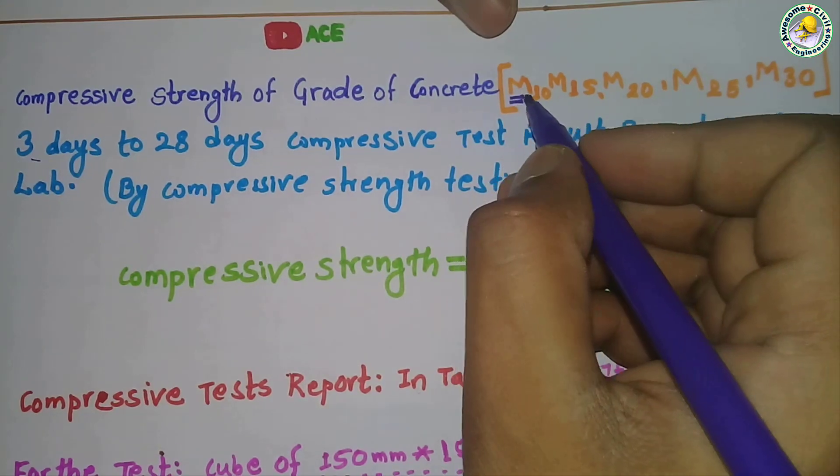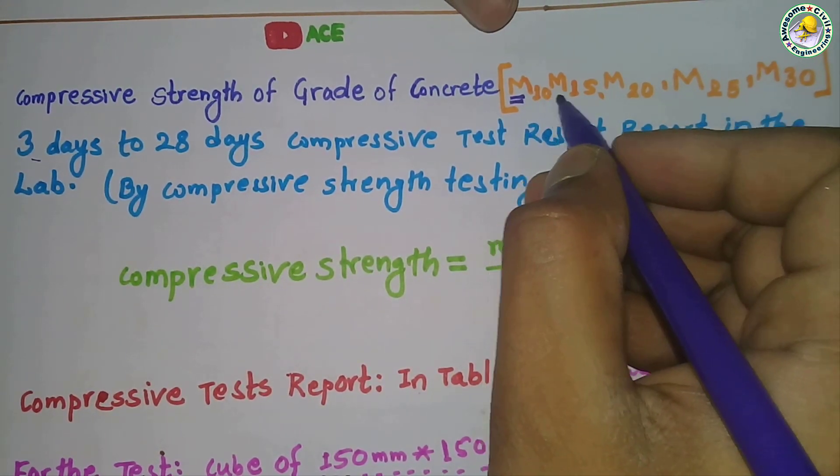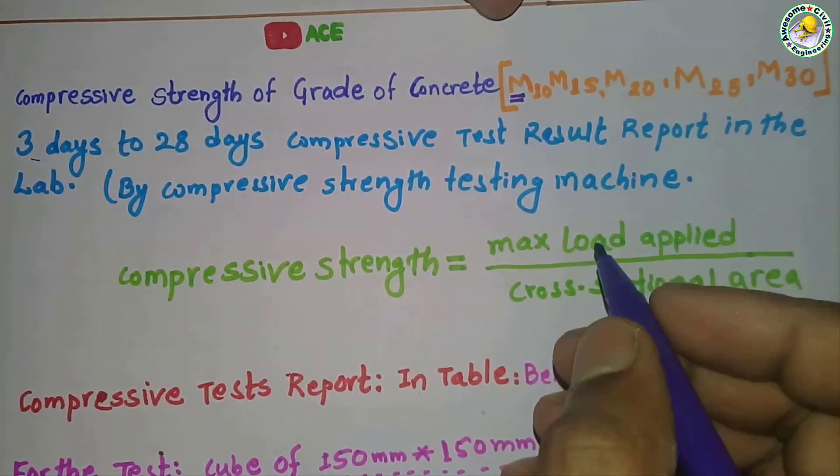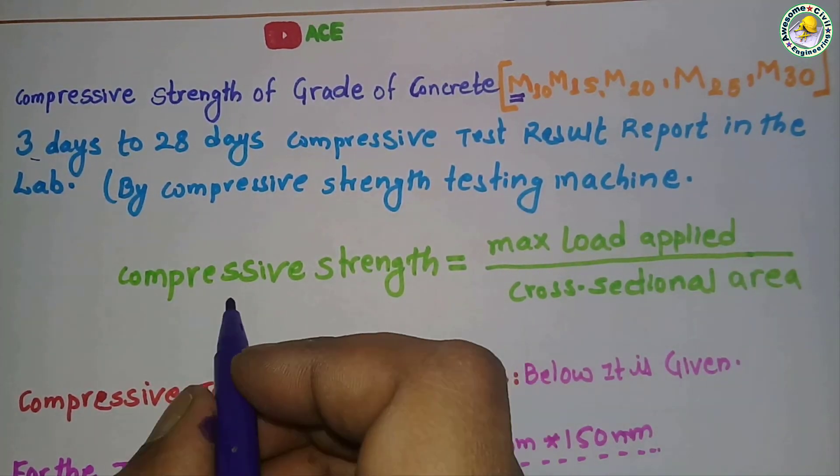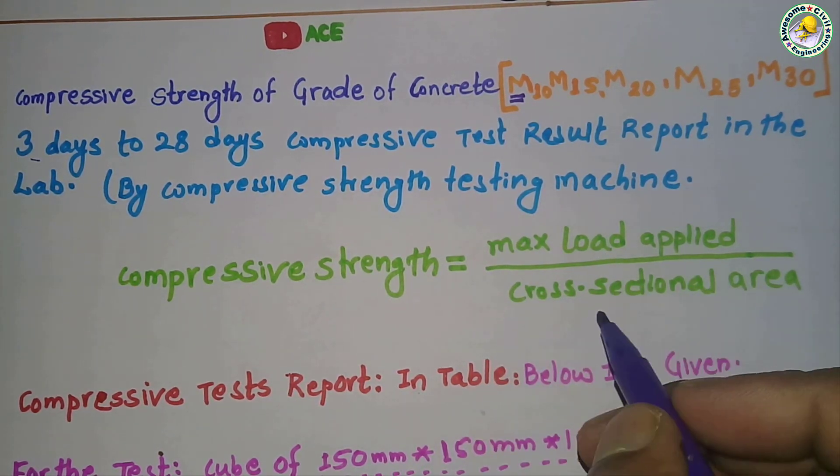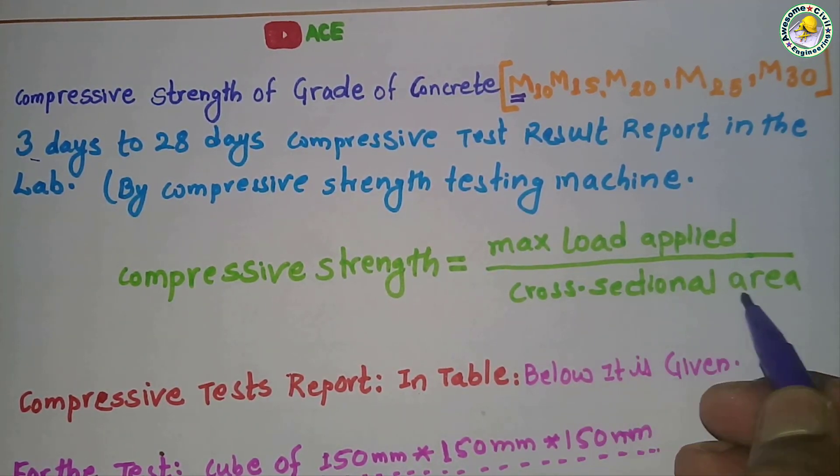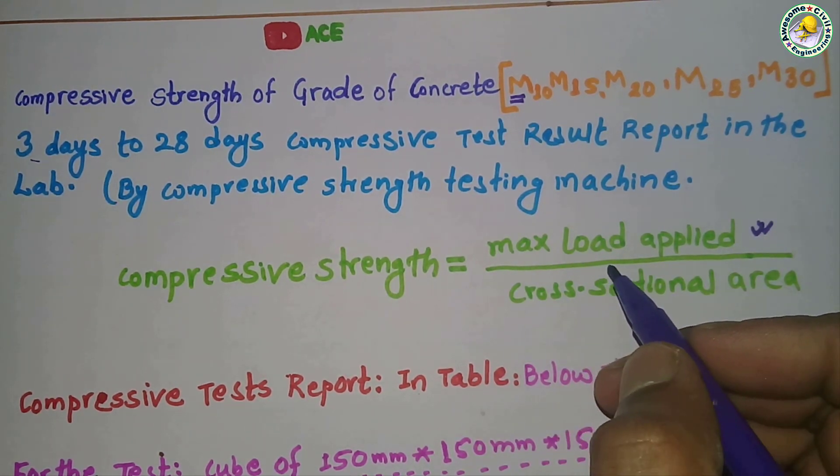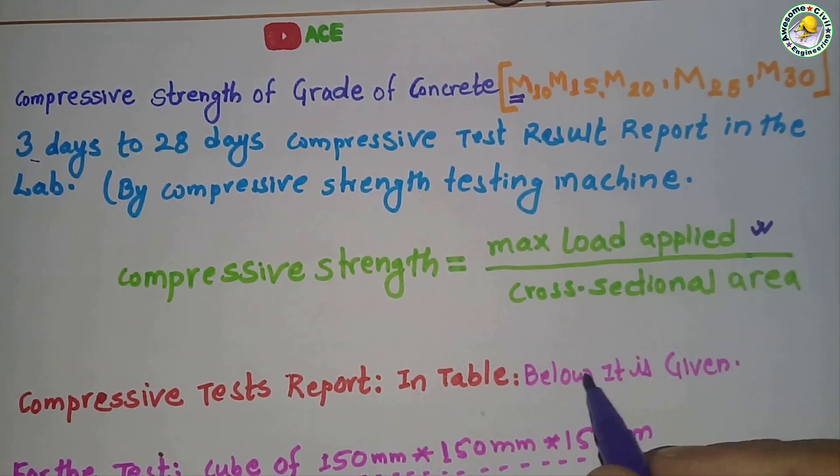M denotes mix design. 10, 15, 20 - these denote the characteristic strength of that concrete used. Now, compressive strength equals maximum load applied divided by cross-sectional area. Maximum load is from the machine, concrete testing machine, and divided by cross-sectional area.